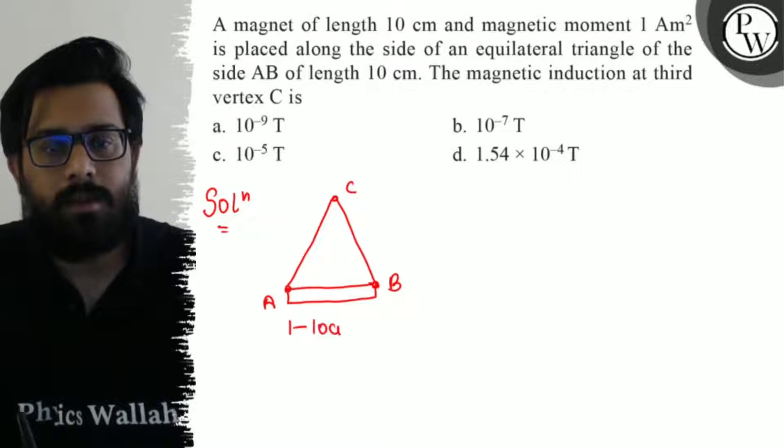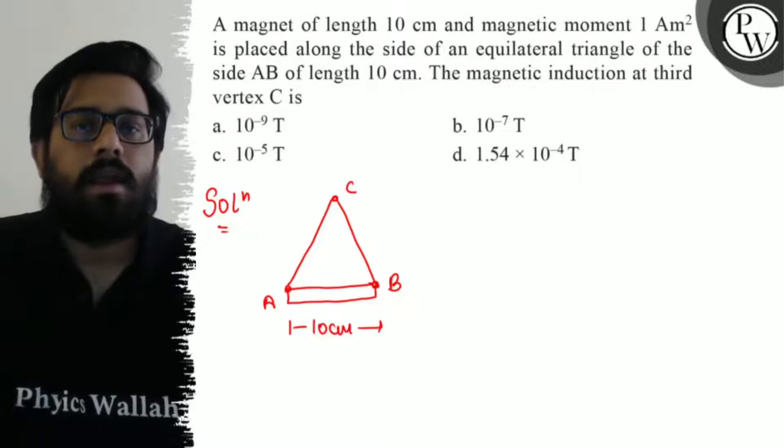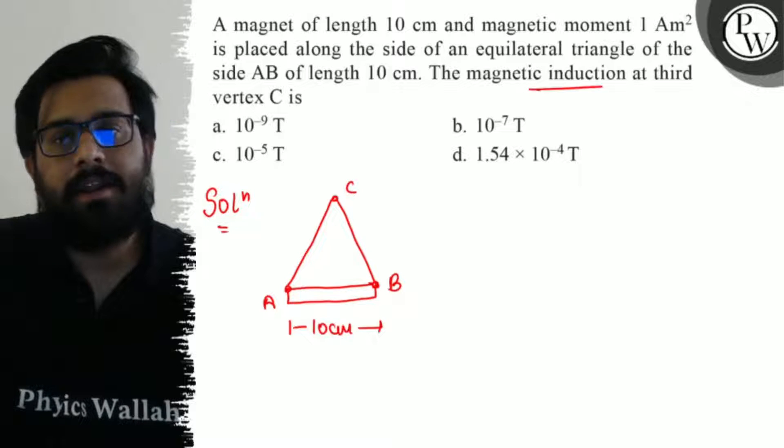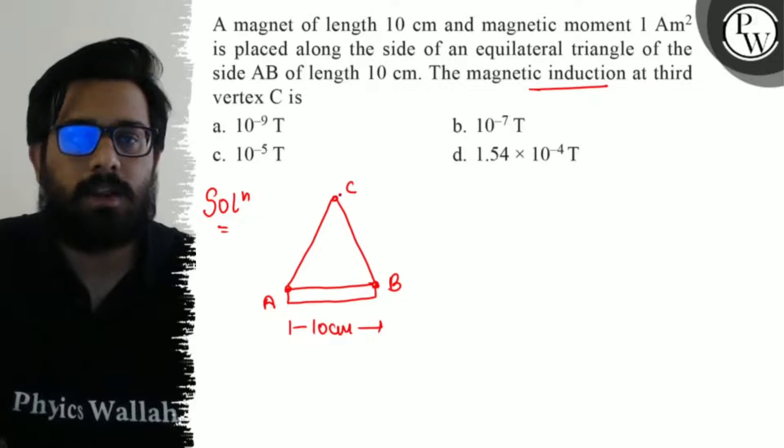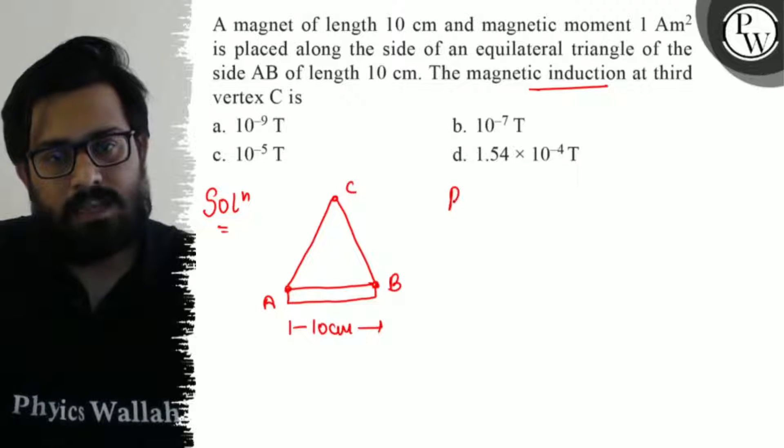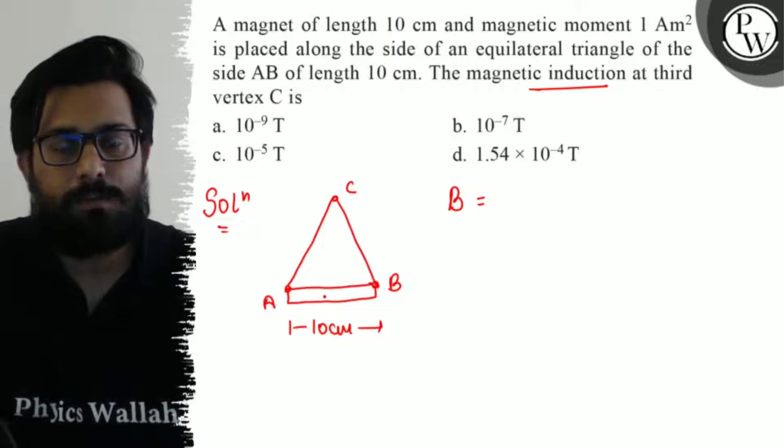Its length is 10 centimeter. And what do I have to find? Magnetic induction I have to find out at the vertex C. At C I have to find magnetic induction because of this bar magnet. So this is the bar magnet.